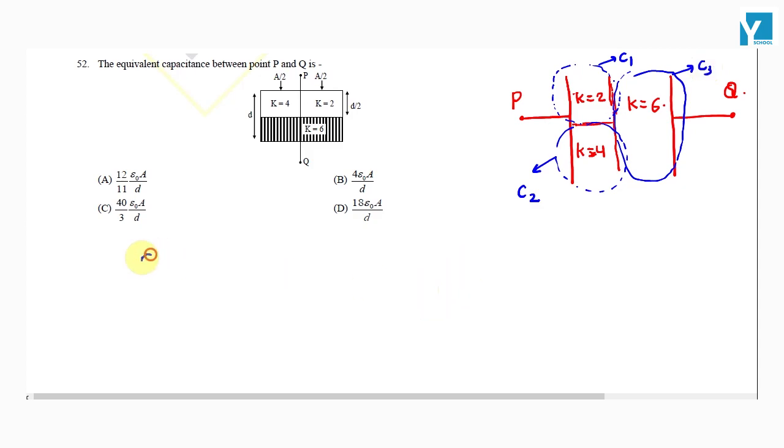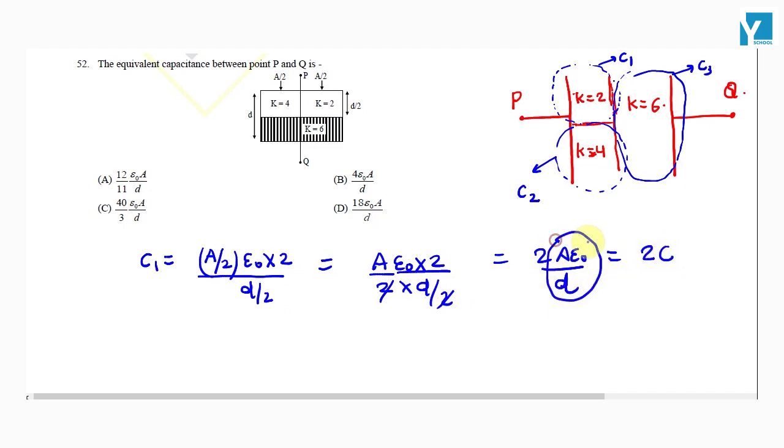C1 is equal to area of the plate which is A by 2, epsilon naught into dielectric constant k divided by d by 2. This equals A by 2 epsilon naught into 2 divided by d by 2, which is 2A epsilon naught by d, or we can say this is 2 times C. Let's say this quantity to be C.